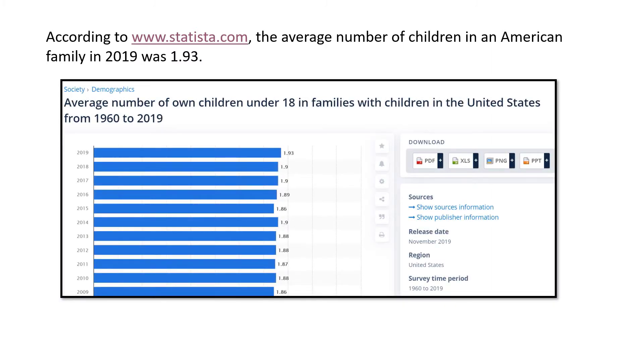Think about that for a minute. The number of children, 1.93. Do you have siblings? If so, which one of you was the 0.93 child?